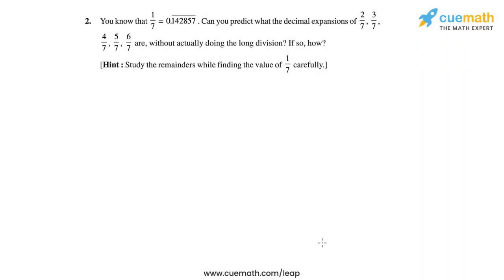Question 2 of this exercise is quite interesting. It says that we know the decimal representation of 1 by 7 is the recurring decimal 0.142857, where there is a bar on 142857, meaning this block of digits repeats. So this is a non-terminating recurring decimal.